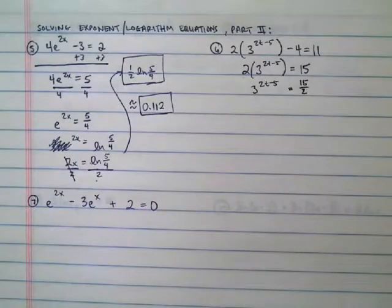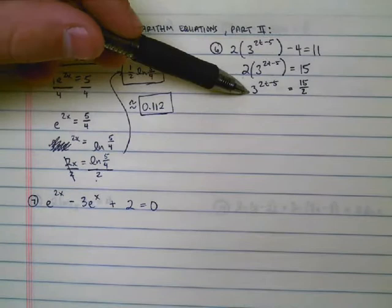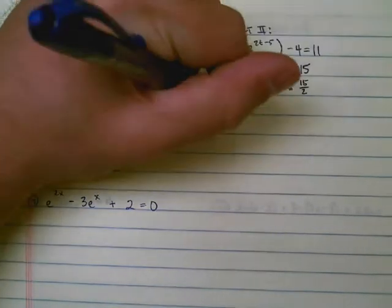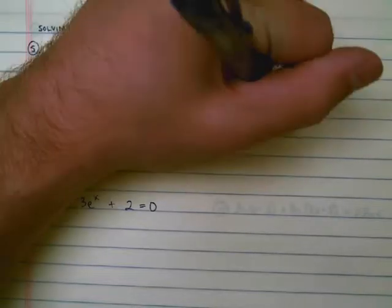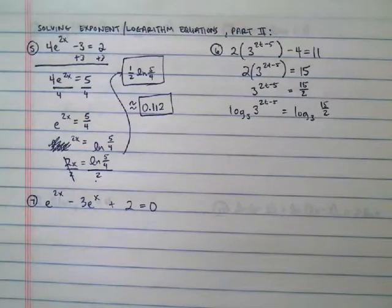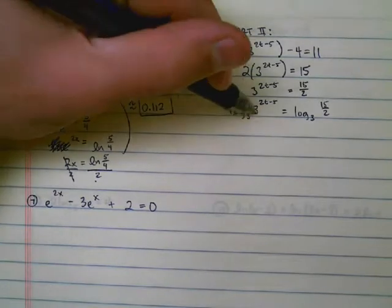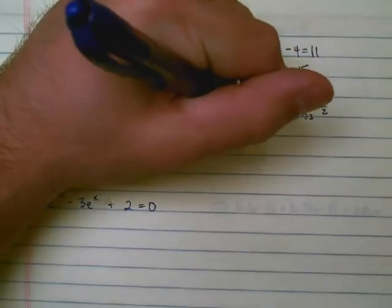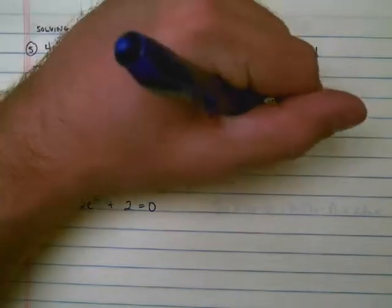Now that I've got the 3 by itself, now comes the crucial step. Over here, because I had an e, I did the natural log of both sides. Over here, because I have 3 raised to the power, I need to do the log base 3. The log base 3 of 3^(2t-5) equals the log base 3 of 15/2. I have log base 3 of 3 to the power, so those go away, and I'm left with 2t - 5 equals log base 3 of 15/2.